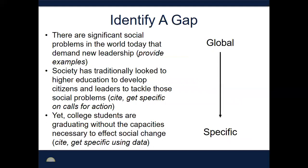It's useful to think about your research agenda as a funnel moving from something large and global to something really specific and focused. For instance, there are significant social problems in the world today — poverty, racism, classism, climate change — that demand new leadership. Society has traditionally looked to higher education to develop citizens and leaders to tackle those problems. There are a number of policy reports, such as the Wingspread Declaration on Civic Engagement and A Crucible Moment, both calling upon higher education institutions to better develop leaders for the future.